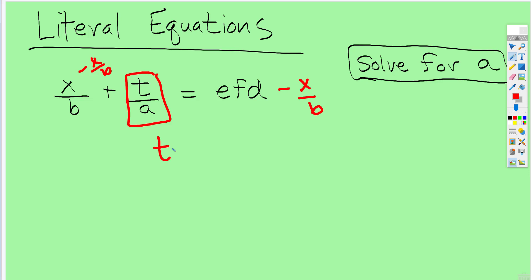So now I have t over a is equal to this phrase. But this is a fraction and this isn't. So there's an invisible one underneath there. I'm going to multiply top and bottom by b. Now we have befd subtract x all over b.